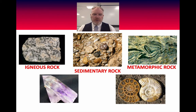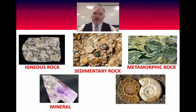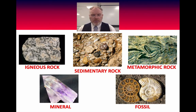Bottom left, we see a mineral — a distinctive crystal shape that's the same all the way through. And finally in the bottom right, what's fairly obviously a fossil — that organic form; in this case a fossil called an ammonite. Those are the five groups.